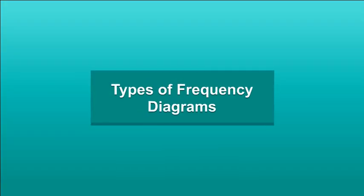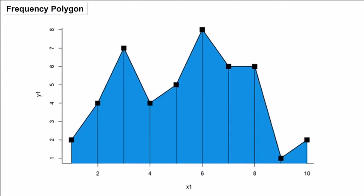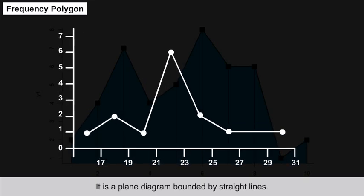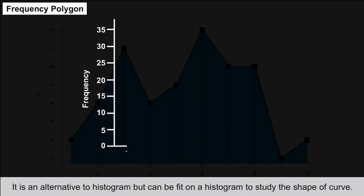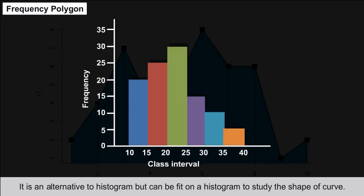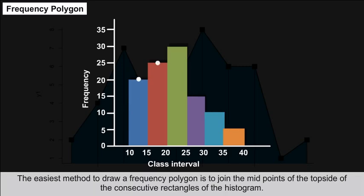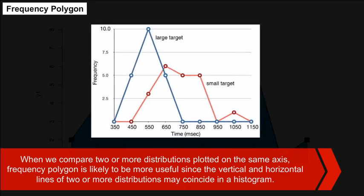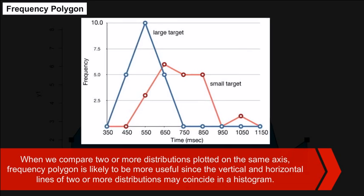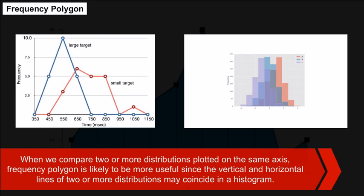Frequency Polygon: A frequency polygon is a plane diagram bounded by straight lines, containing four or more lines. It is an alternative to the histogram but can be fitted on a histogram to study the shape of the curve. The easiest method to draw it is to join the midpoints of the top sides of consecutive rectangles of the histogram. When comparing two or more distributions on the same axis, frequency polygons are more useful than histograms, as the lines of multiple distributions may otherwise coincide.